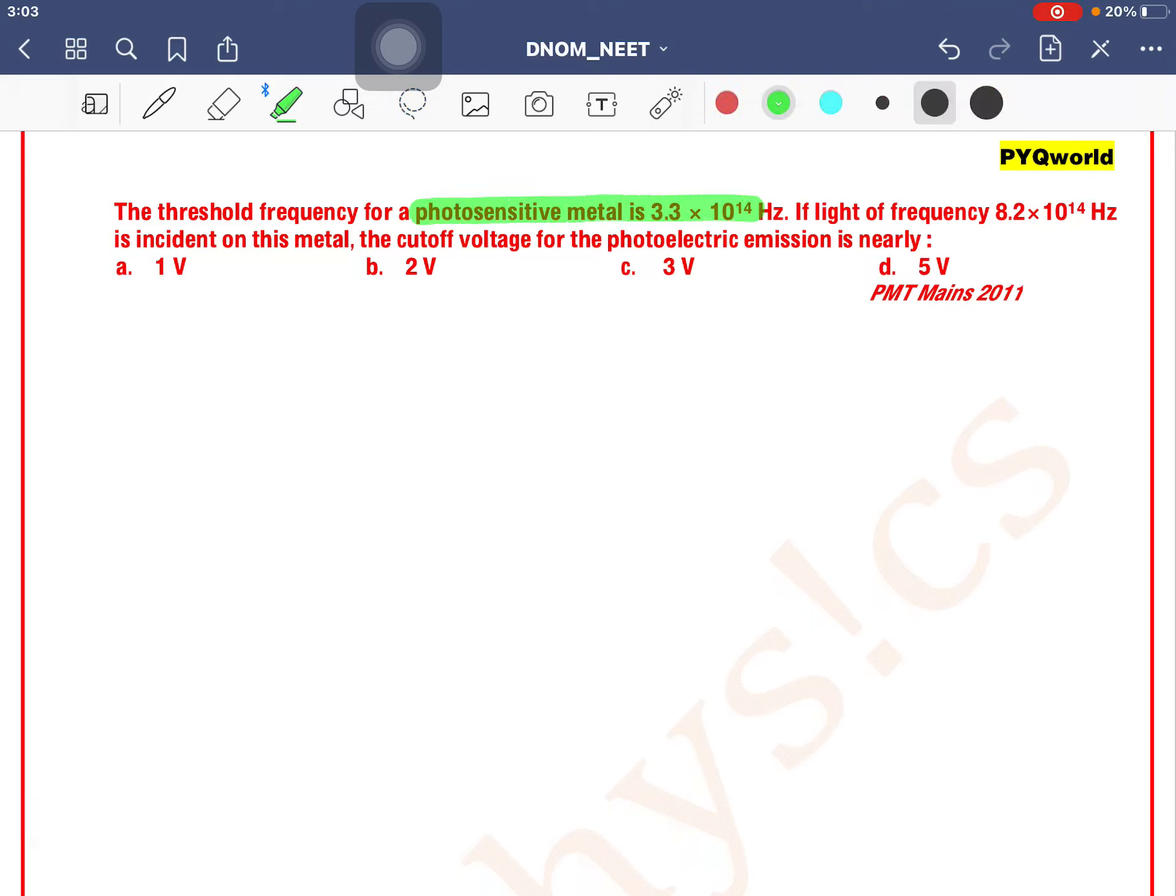The threshold frequency for a photosensitive metal plate is 3.3 × 10^14 Hz. If light of frequency 8.2 × 10^14 Hz is incident on this metal, the cutoff voltage for the photoelectric emission is nearly: